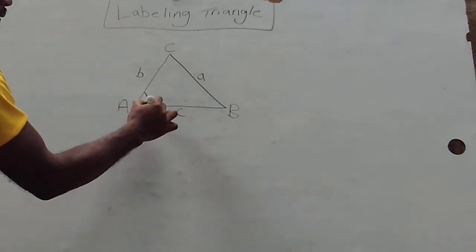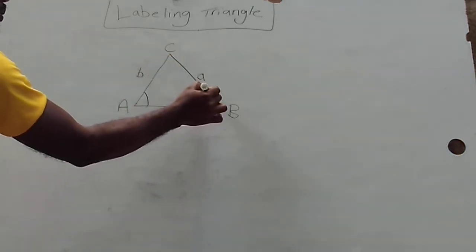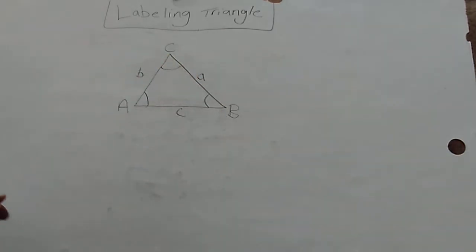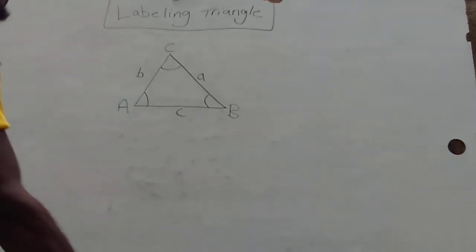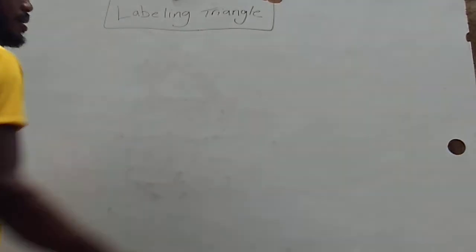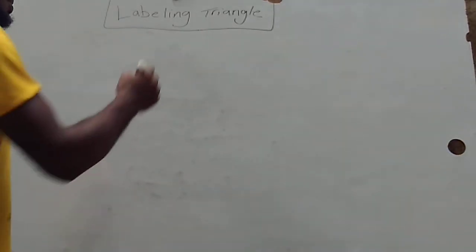So right here would be angle A, angle B will be here, and angle C would be here. So that is how we label a triangle. However, a right angle triangle can be labeled in another way.